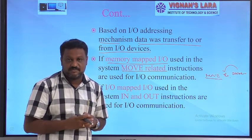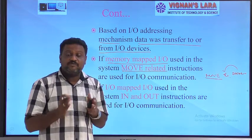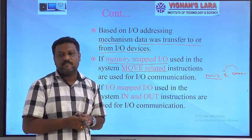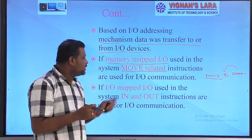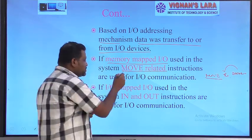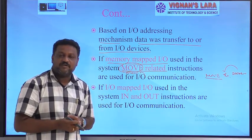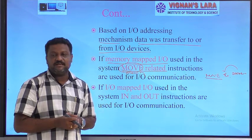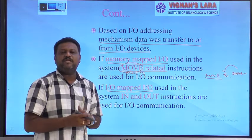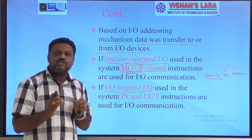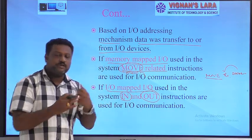Based on the I/O addressing mechanism, data is transferred from the CPU to an I/O device or from an I/O device to the CPU. If the system follows memory-mapped I/O, the CPU uses only memory-related instructions to communicate with I/O devices. Similarly, if the CPU uses I/O-mapped I/O (isolated I/O), it uses separate dedicated instructions called IN and OUT to communicate with I/O devices.